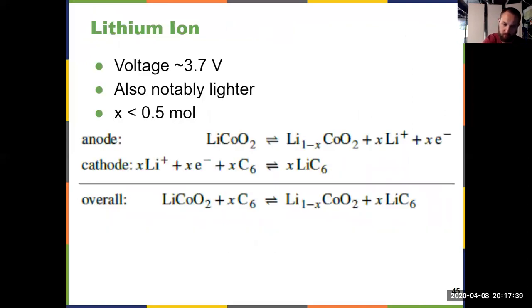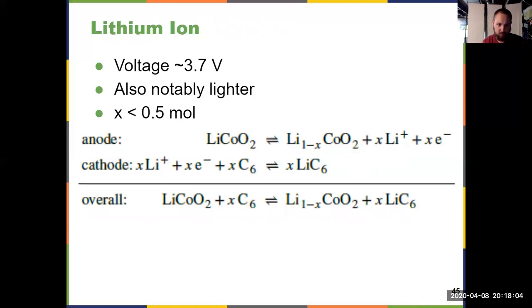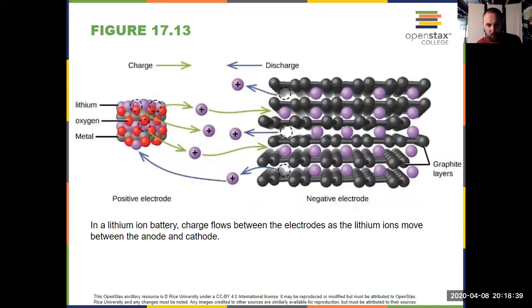Lithium-ion batteries are what's in your cell phone. They have a much higher voltage and much lower mass — notably lighter than other battery types. The general reaction scheme involves lithium, cobalt, oxygen, and C6, dealing with graphene. The drawback is that if the separator in a lithium-ion battery starts to degrade, you run the risk of them exploding, because it heats up the battery, speeds the problem up, and as soon as there's exposure to oxygen, these batteries can explode.